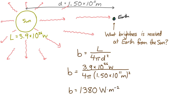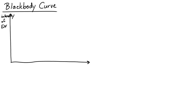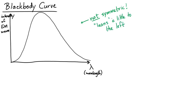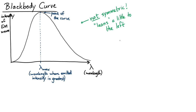Now let's look at something called the black body curve. The black body curve is plotted with intensity of electromagnetic waves on the vertical axis and wavelength on the horizontal axis. If we plot that, it looks roughly like a hump for a black body. What's important is that this curve has a peak at some wavelength — we'll call it lambda max. Lambda max is related to the temperature of the object: lambda max times T equals 2.9 times 10 to the minus 3 meters times Kelvin.